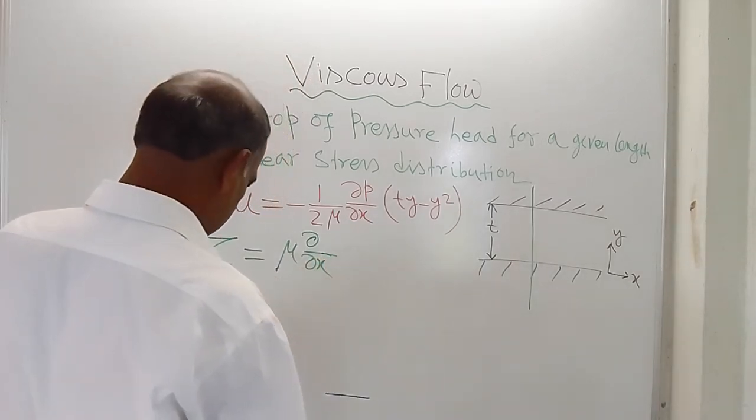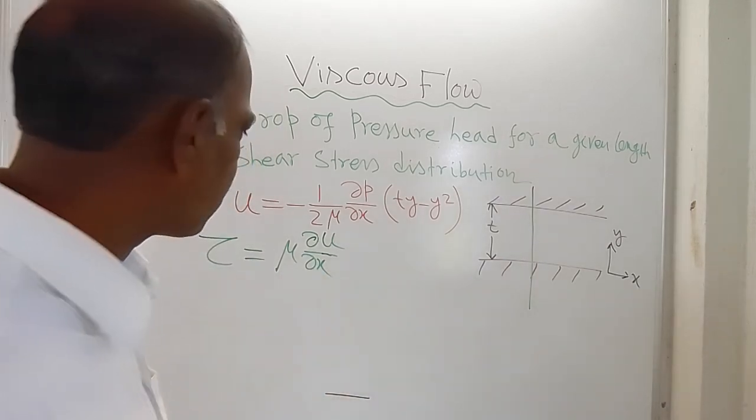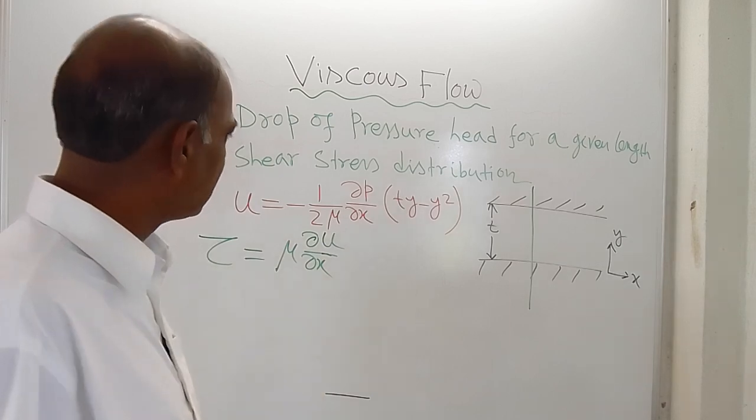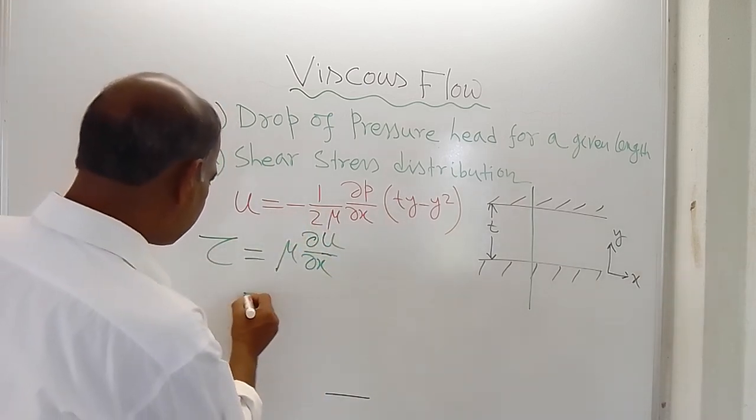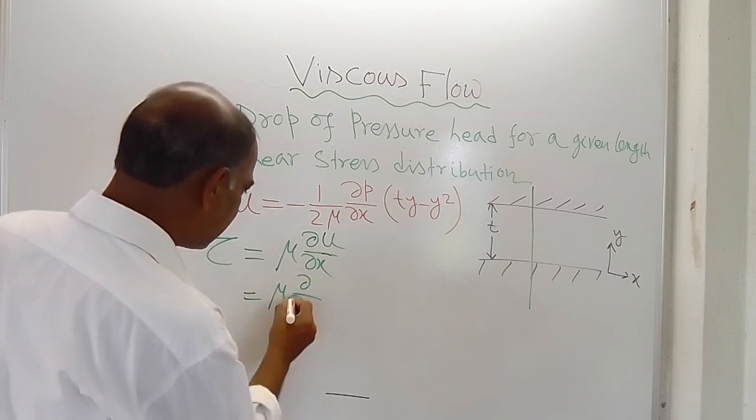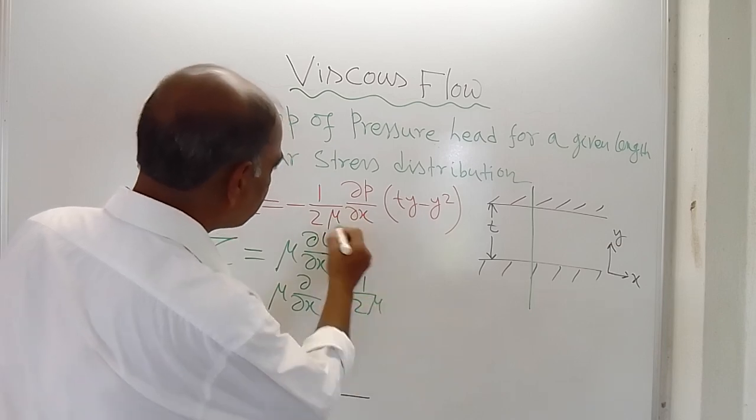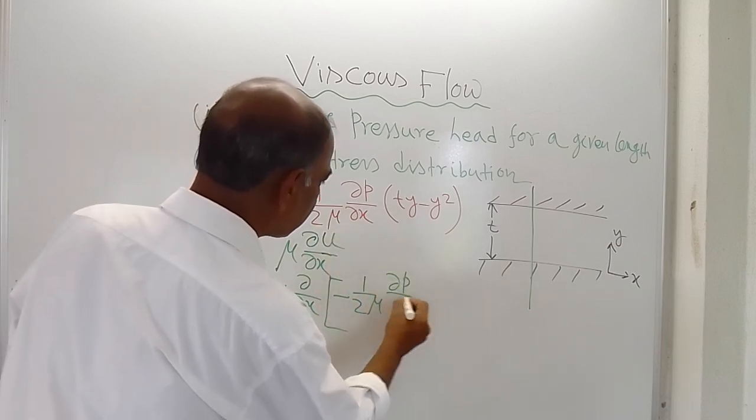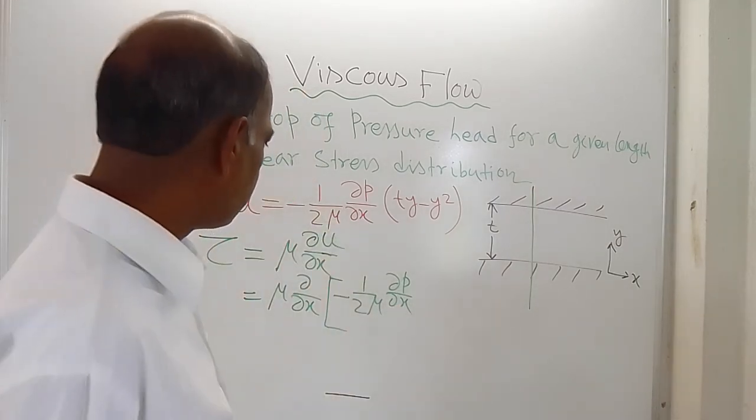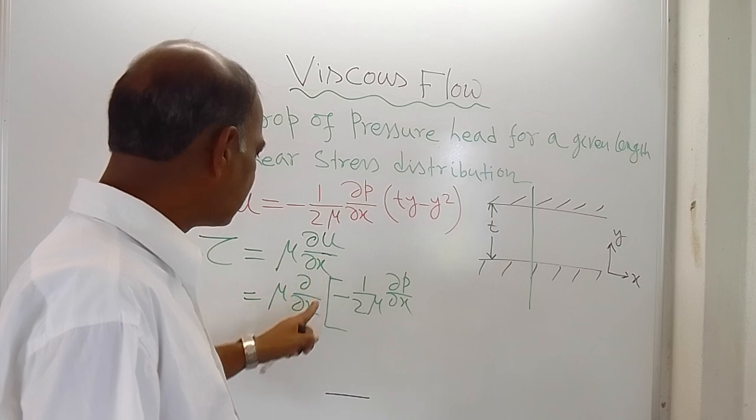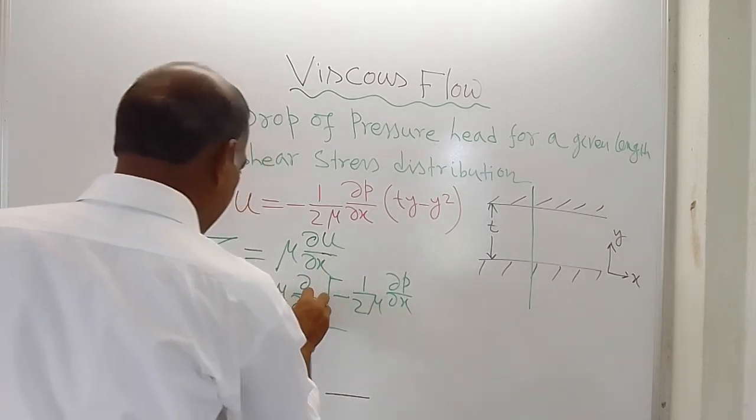Tau is equal to mu del u del y. So what you need to do is just differentiate this: del u del y, then put this bracket minus one by two mu, this one, del p del x.